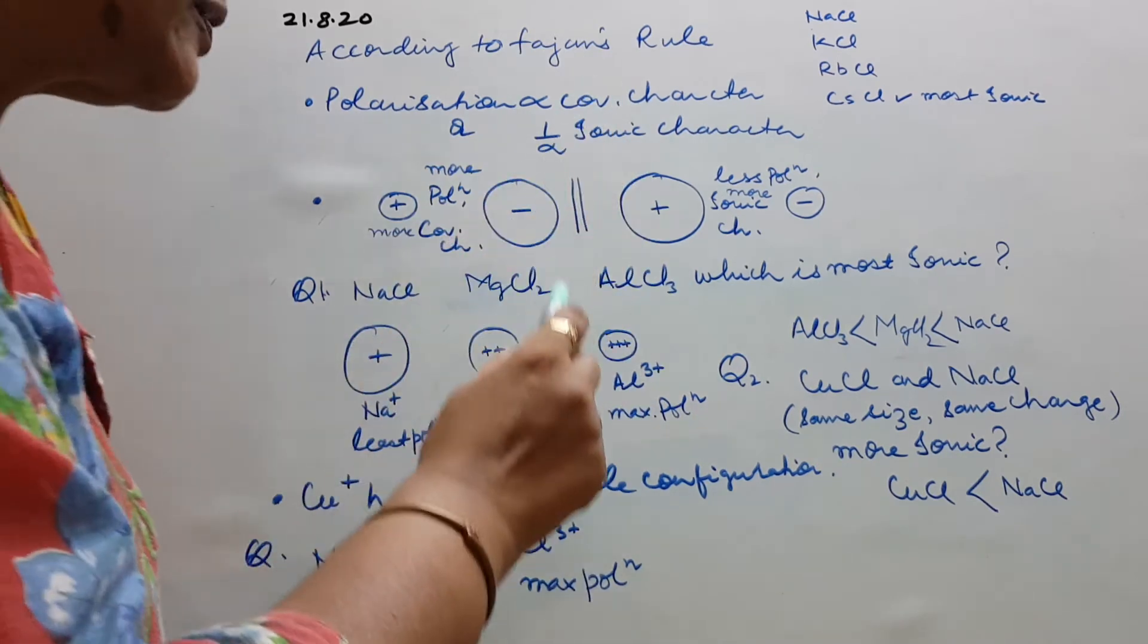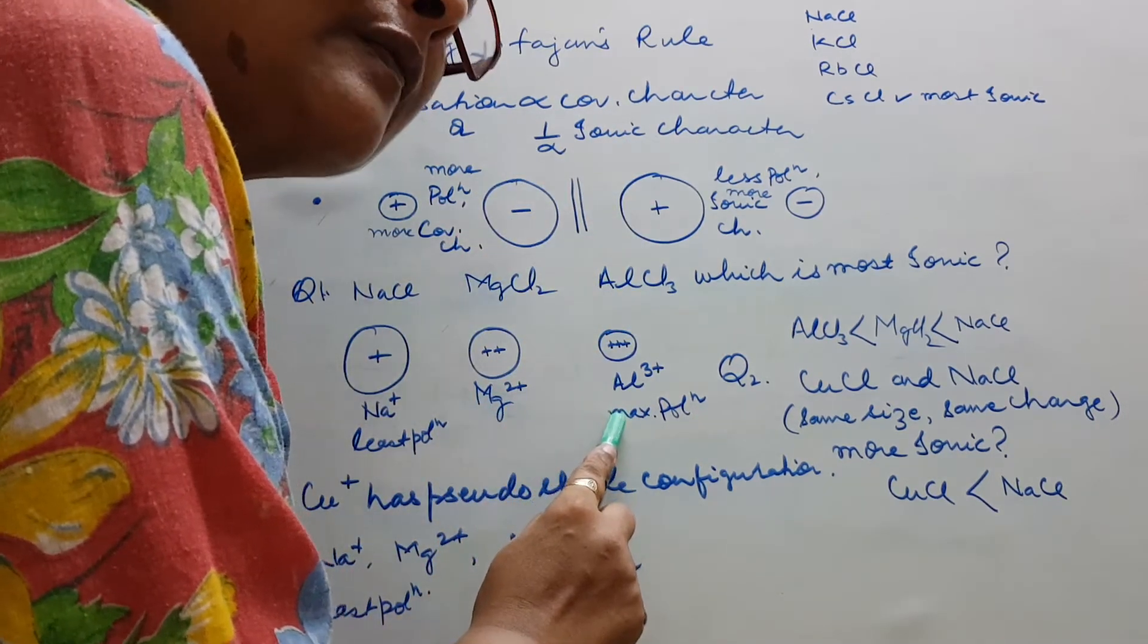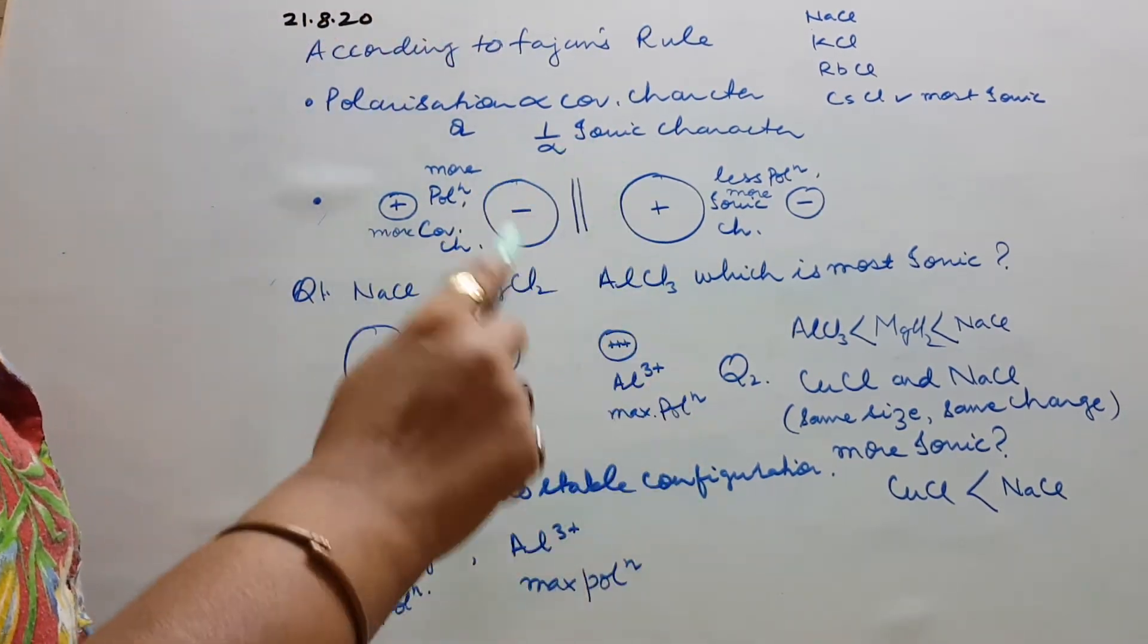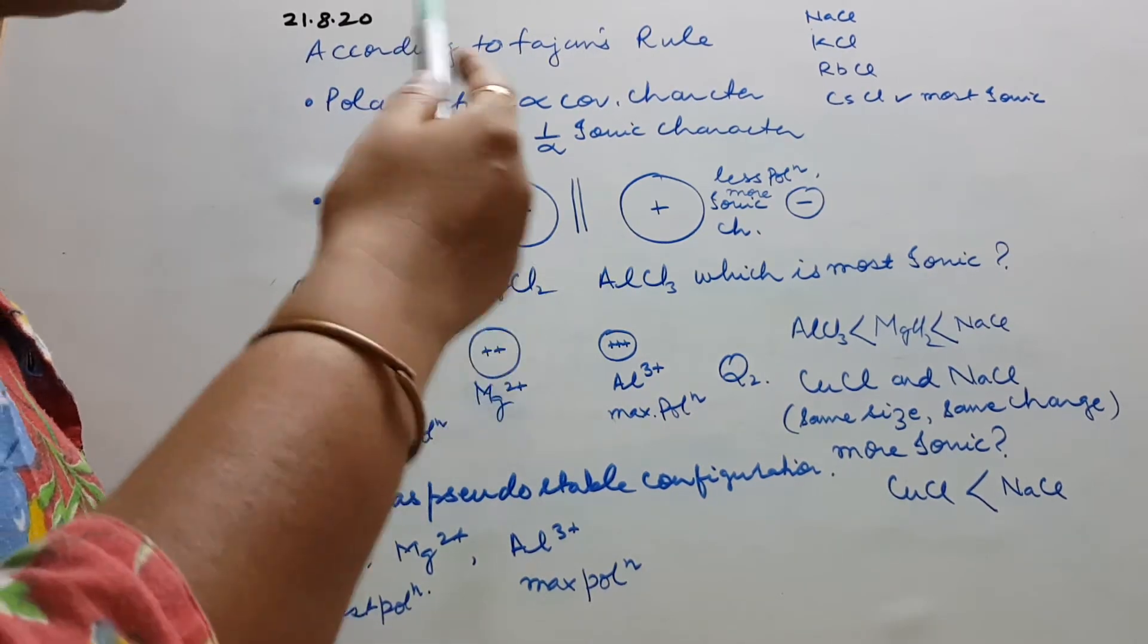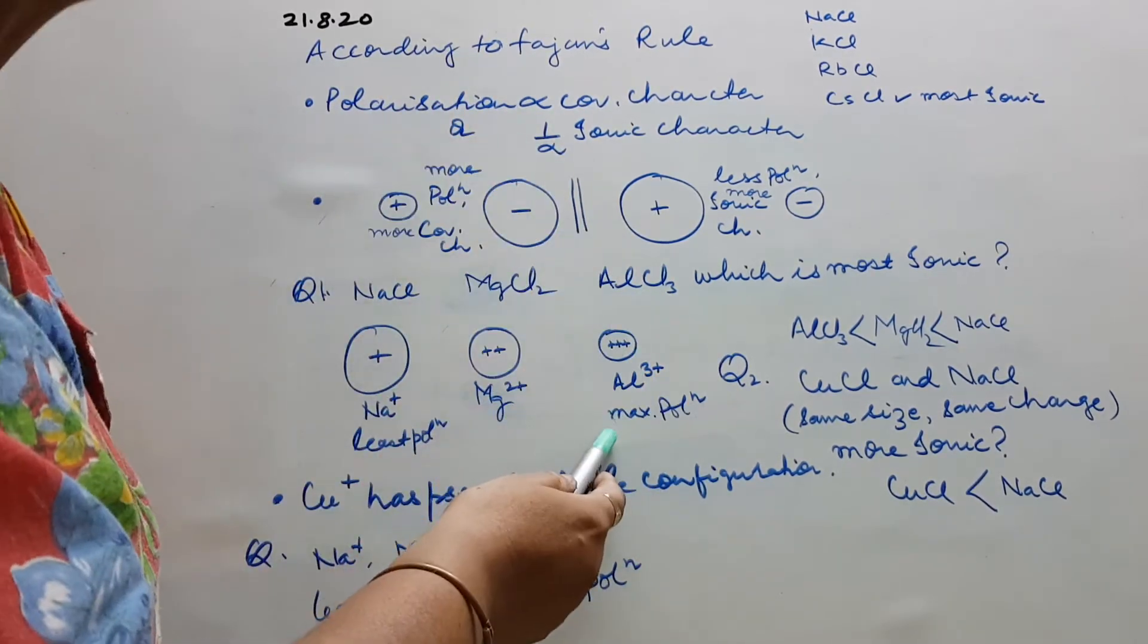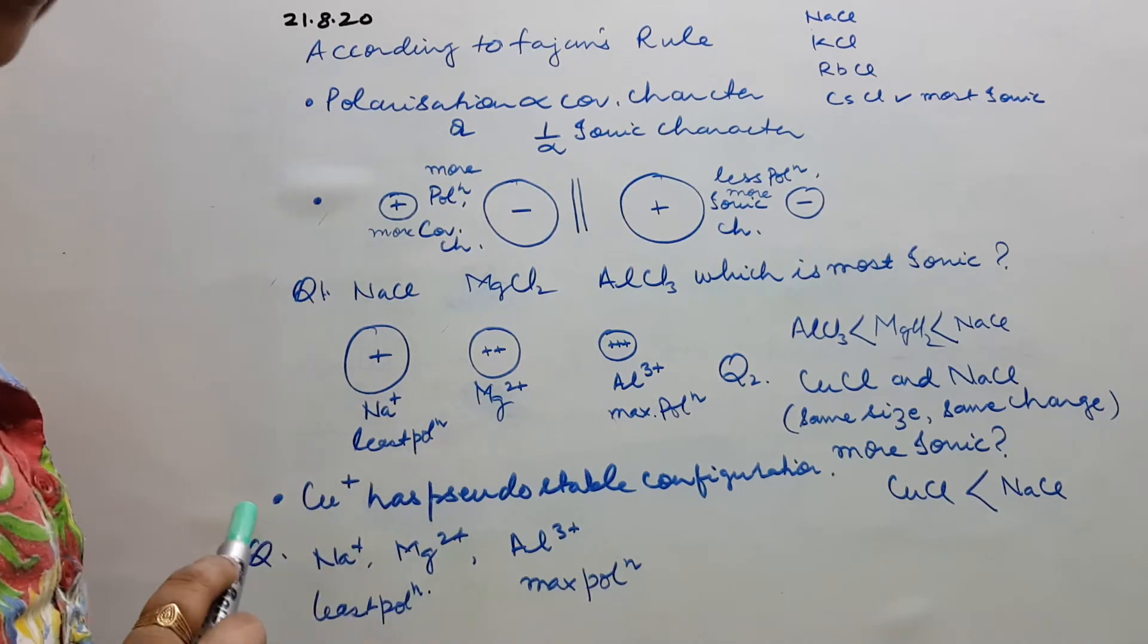So we will say according to Fajan's rule, this will have the greatest polarization and hence maximum covalent character. And why greatest polarization? Because the smallest size of the cation out of these three.